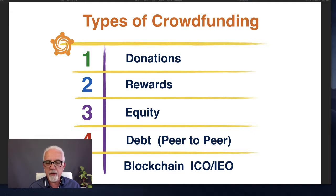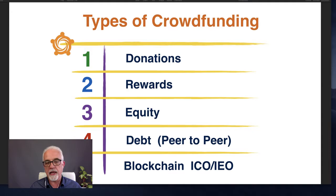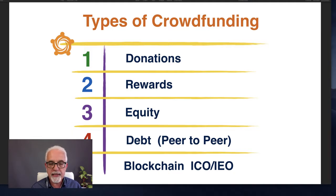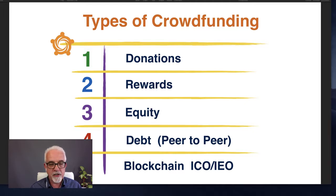Equity crowdfunding is very much like a Dragon's Den or Shark Tank situation — you're selling off a percentage share of your business, but instead of to one or two dragons, you're selling it off to hundreds of people who come in with small amounts. Debt-based crowdfunding is like a bank: instead of going to a bank for a loan, you go to a crowdfunding website. And then the last type is crowdfunding on the blockchain, sometimes referred to as ICO — Initial Coin Offering — or IEO — Initial Exchange Offering.